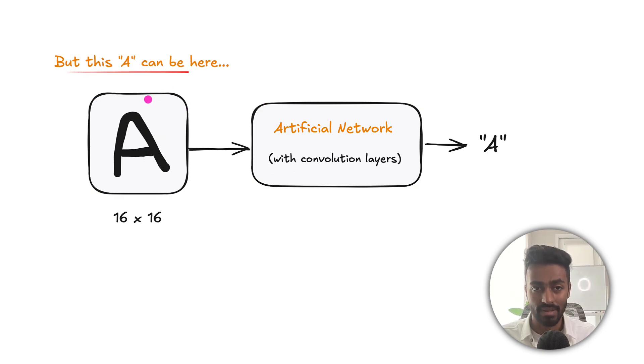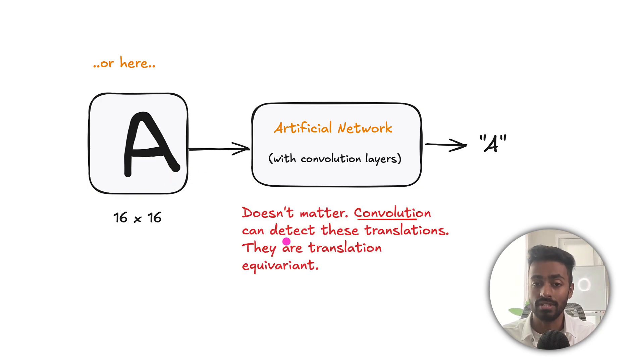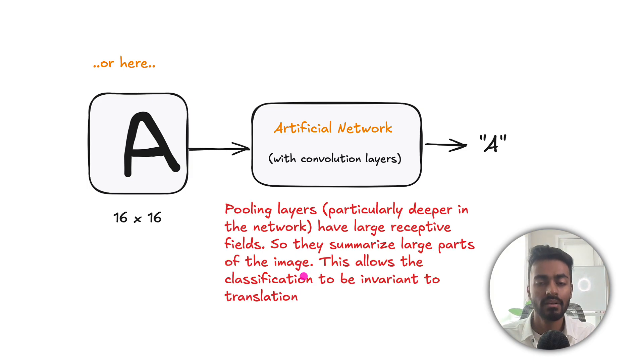But now this A can be here, or it can be here, or it can be here. So it can be translated in different parts of the images. How do we deal with that? Well, it doesn't really matter because convolutions can detect these translations. They are translation equivariant. And specifically when we have convolution layers, they are going to use a sliding window to look for certain features in every part of the image. So no matter where in the image the A exists, it is still going to be detected by the convolution features. But if A is slightly shifted, then the features that are detected by the convolution operation are also shifted. And this is why we say that it is translation equivariant with respect to the input.